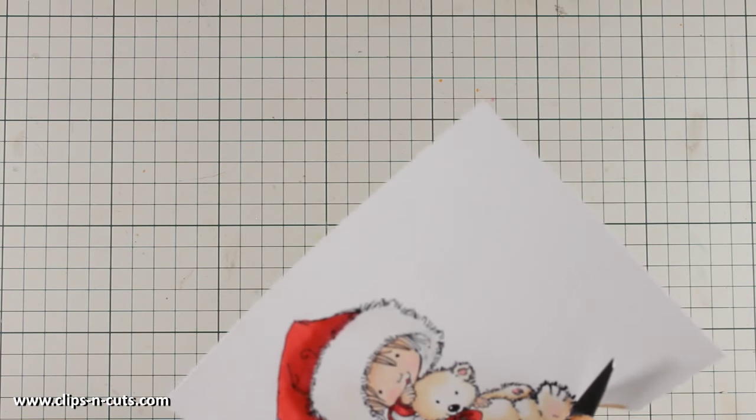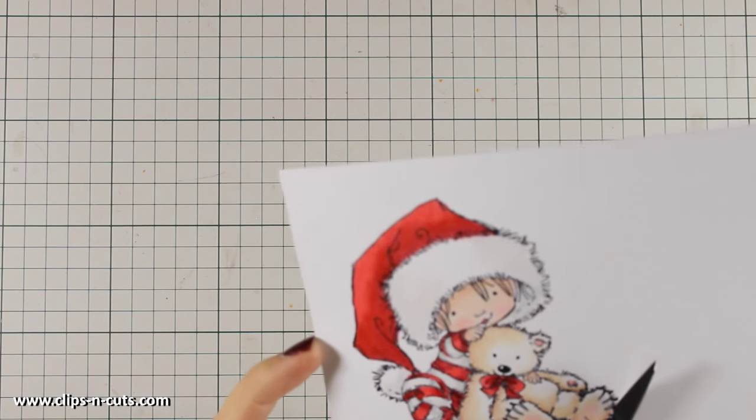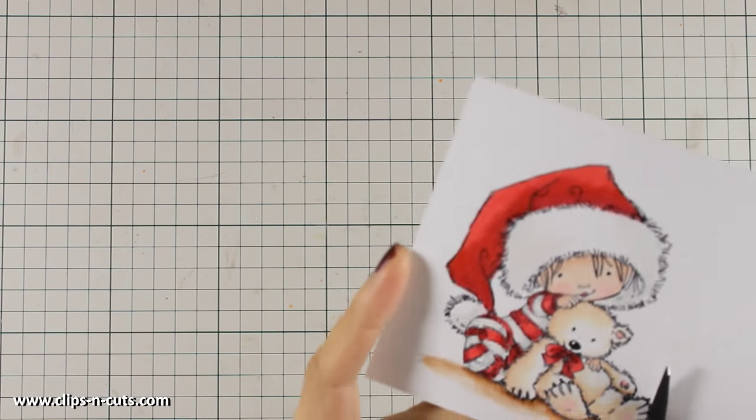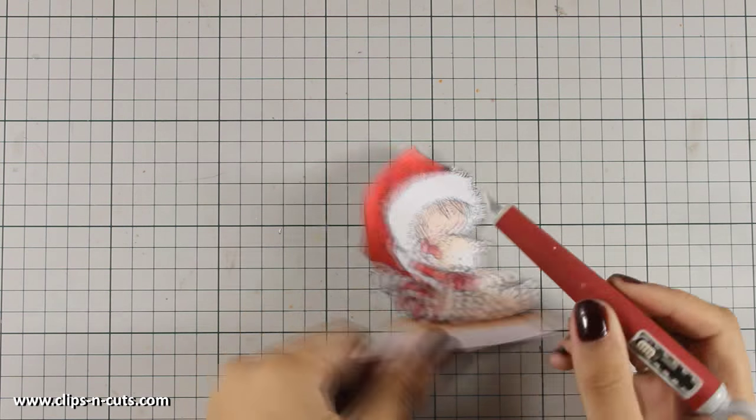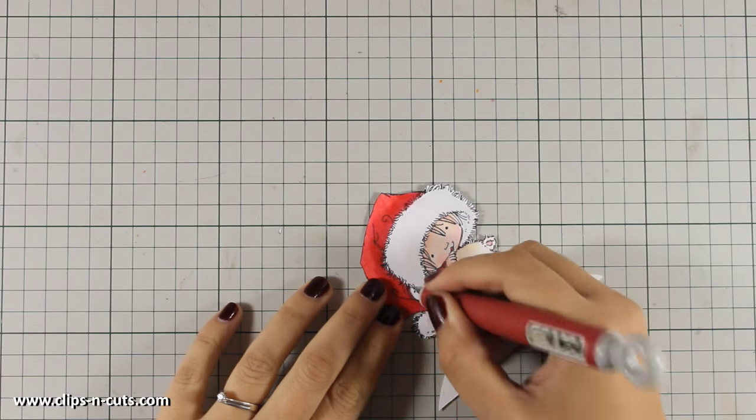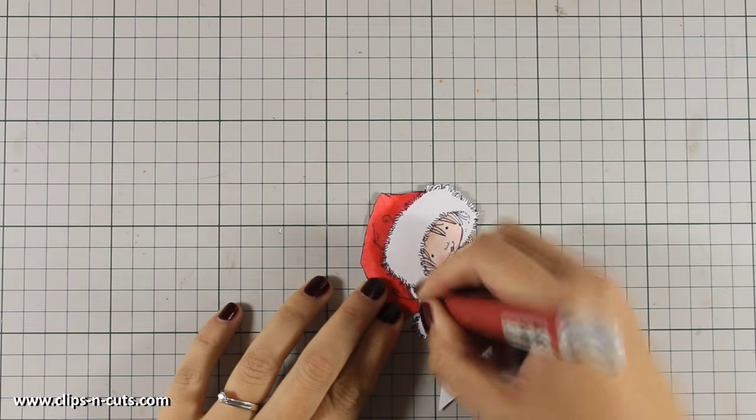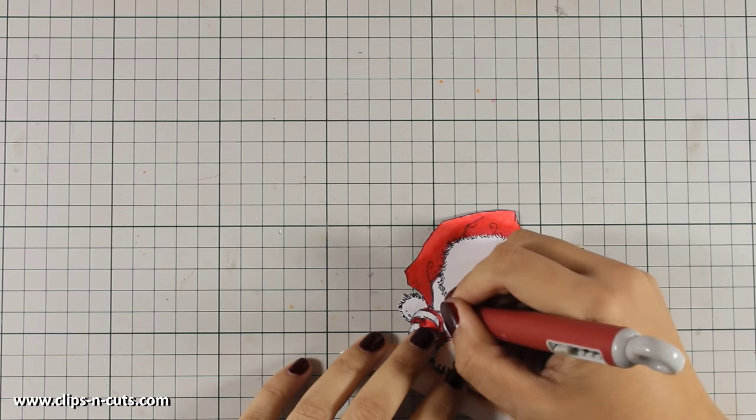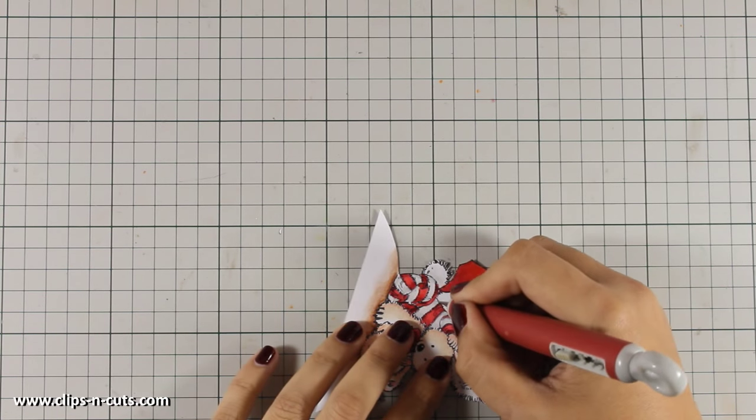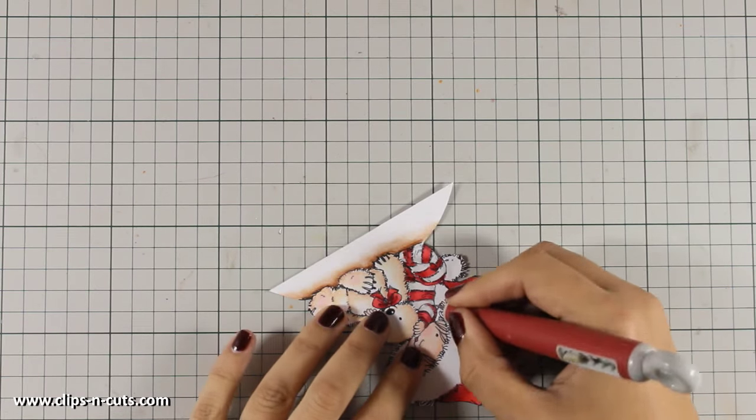As always you can find a full list of all the supplies that I am using today just below in the description area if you are watching on YouTube, but you can always find the full list of supplies on my blog. I am going to use my craft knife and I am going to cut out that white space under her hat and once that's done I am ready to start working on my card base.